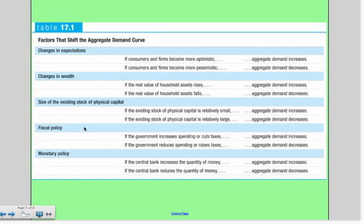Here's a quick chart that helps summarize the factors that shift the demand curve. So it reads this way: changes in expectations, for example, if consumers and firms become more optimistic, then aggregate demand increases. Conversely, if consumers and firms become more pessimistic, aggregate demand decreases. You can pause and go all the way through this. I'd suggest also taking a look at it in your book as it may be a little bit blurry in this video.